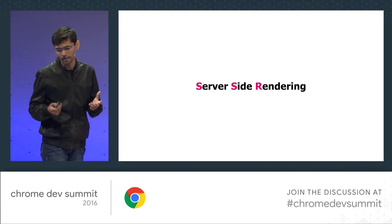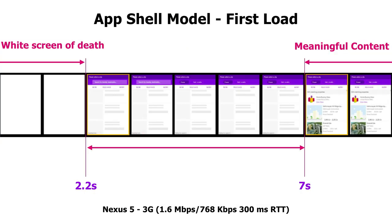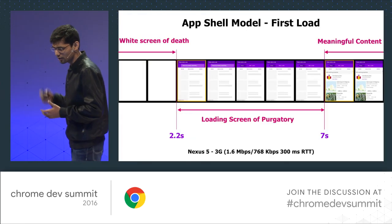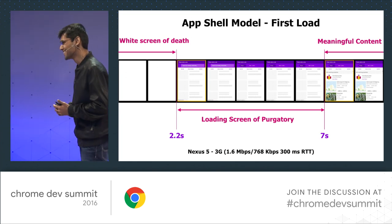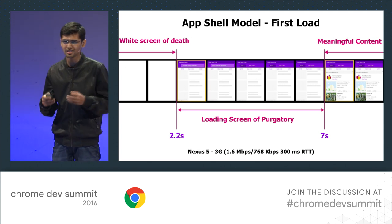So we experimented with server-side rendering. I'm saying experimented because you should always measure before you implement. In a traditional app shell model on first load, till 2.2 seconds there's a white screen of death. Then there's a state where you have something but it's not relevant to the user. Around seven seconds, you see the first meaningful content. The region between 2.2 and 7 seconds is what we call the loading screen of purgatory.